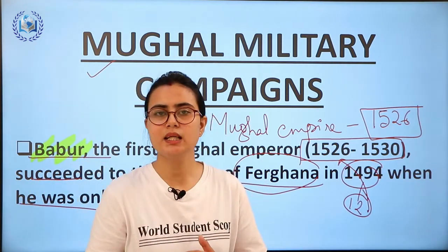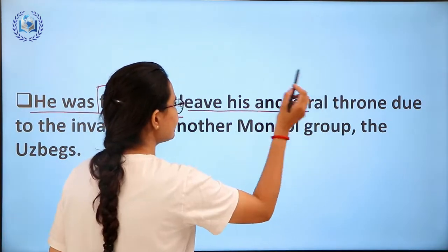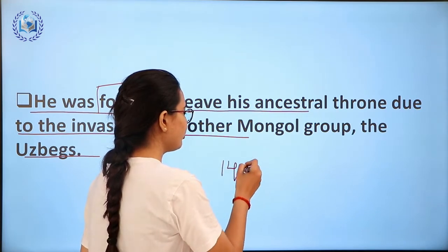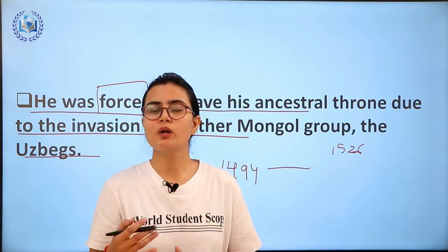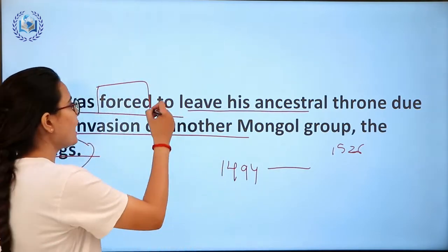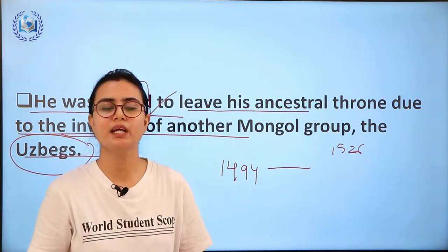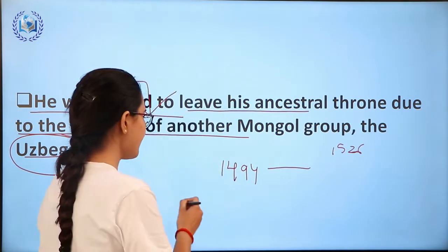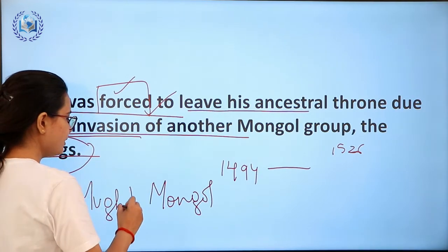He was forced to leave his ancestral throne due to the invasion of another Mongol group — the Uzbeks. The Uzbeks invaded Fergana and forced Babur to leave. Also, the word 'Mughals' itself comes from 'Mongol.' Babur, who was the ruler of Fergana in 1494, came to Delhi in 1526 after a long period.